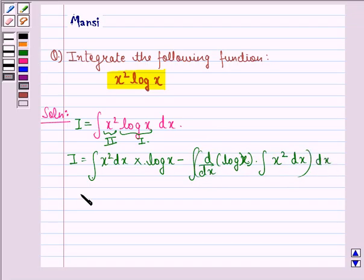This is equal to log of mod x into integral x squared dx is x cubed by 3 minus integral d by dx of log x is 1 by x. Integral of x squared dx is x cubed by 3 and this into dx.